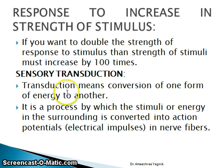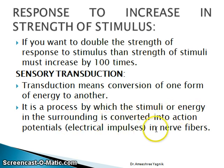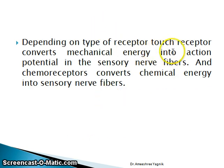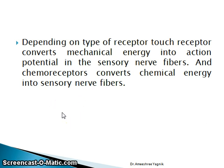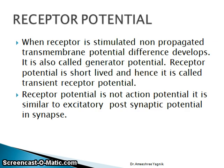Fourth property: sensory transduction. Transduction means conversion of one form of energy to another. It is the process by which stimuli or energy in the surroundings is converted into action potentials — that is, electrical impulses in nerve fibers. Depending on the type of receptor, touch receptors convert mechanical energy into action potentials in sensory nerve fibers, and chemoreceptors convert chemical energy into nerve signals. The receptor must convert any received stimuli into the form of an action potential for further propagation to the nerve fibers.